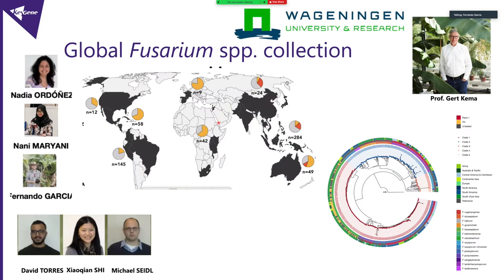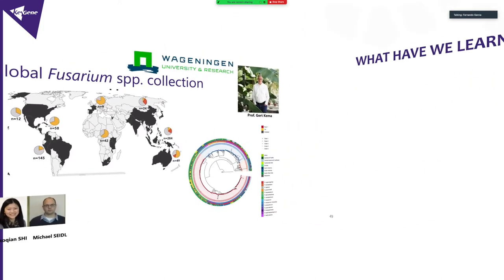We are also working on the Global Fusarium Collection. Thanks to many collaborators, we have a big collection of fusarium, and together with our colleagues at the university, we are developing this phylogeny of Tropical Race 4. When we look at Race 1 including Subtropical Race 4, there are many different small groups. But when we talk about Tropical Race 4, it's just one big line — confirming that it's a really different species.